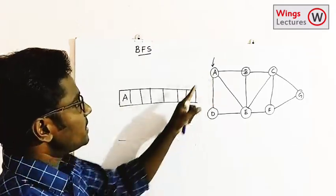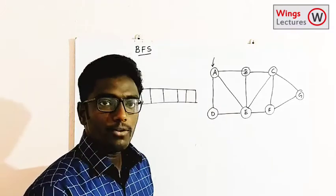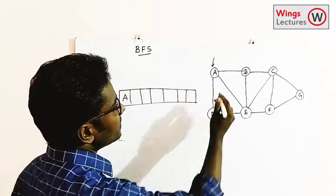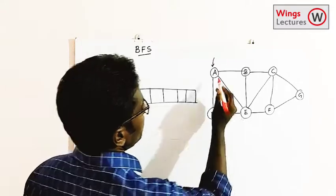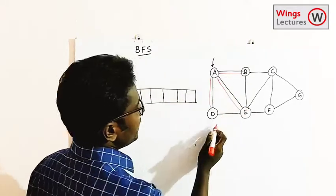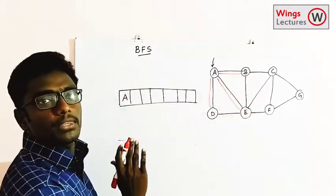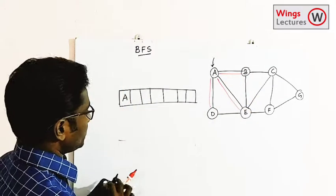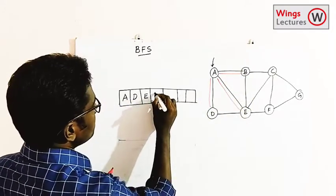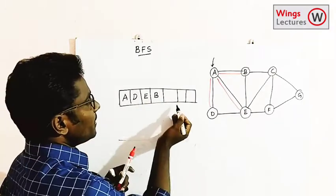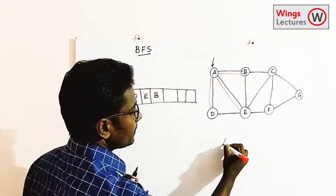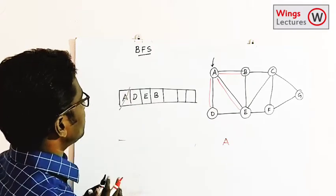After visiting the starting vertex, find out the adjacent vertices of A. The adjacent vertices of A are B, E, and D. Take all three and insert them into the queue. After printing A, make a strikeout because A is now visited.